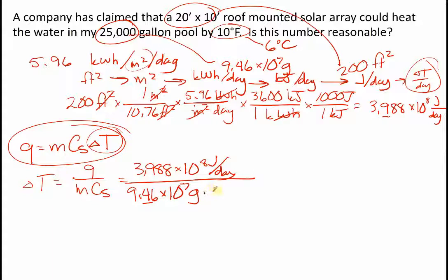And my heat number is 3.988 times 10 to the 8 joules per day. My mass was 9.46 times 10 to the 7 grams. And Cs, let's just count it as pure water, joules per gram Celsius. And this comes out to be 1.0 degrees Celsius per day of heating.